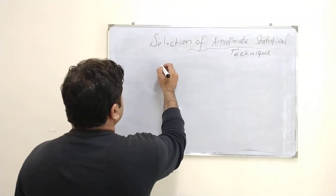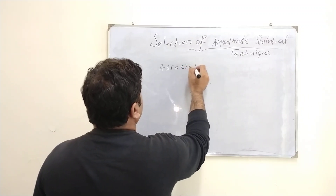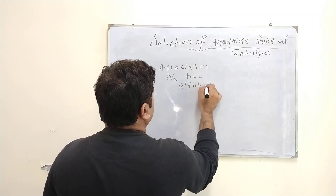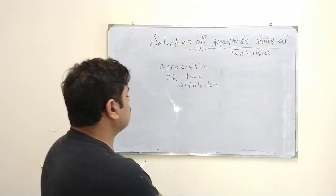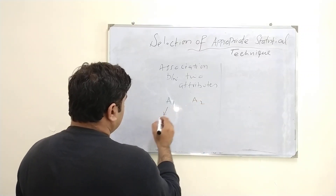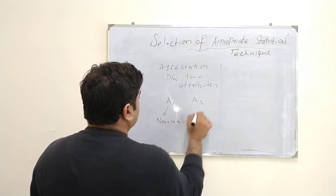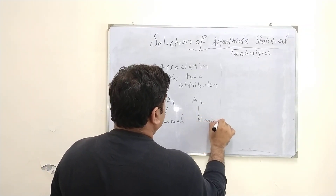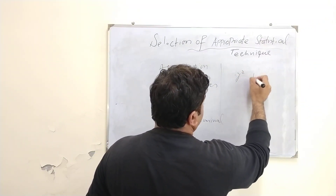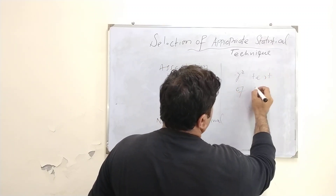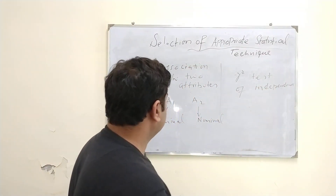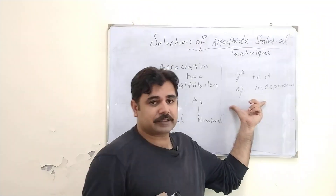If the purpose is to check the association between two attributes measured as nominal data and count data, then you use the chi-square test of independence. This is a non-parametric statistic.